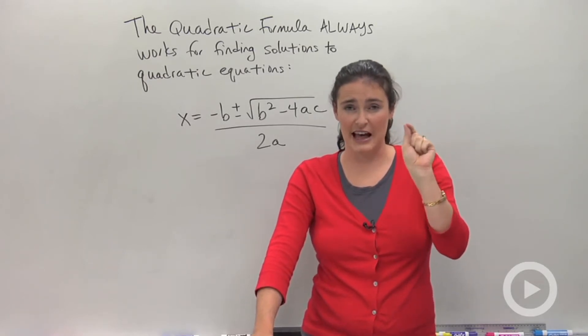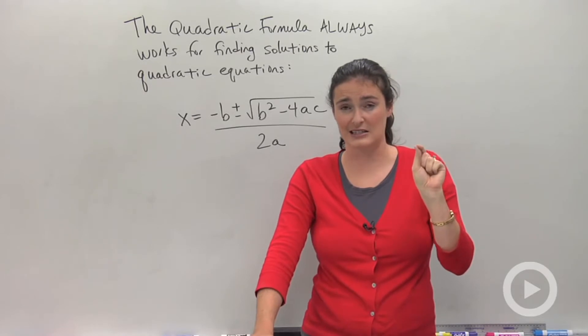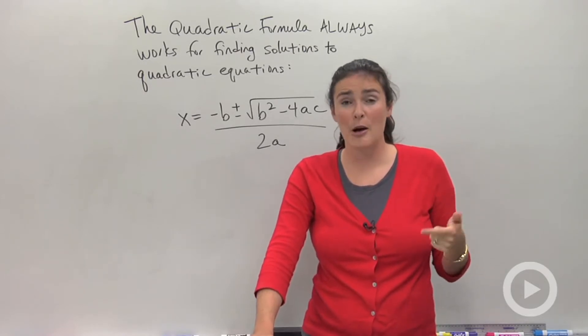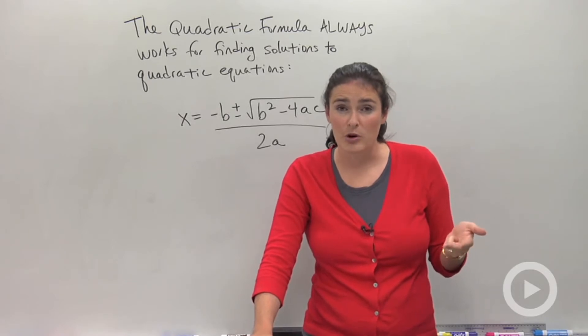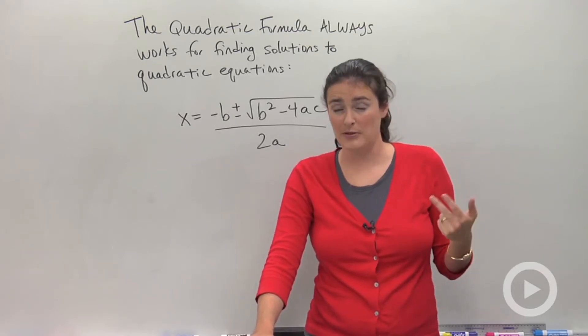Sometimes on the graph it's hard to tell exactly where your line crosses the axis. You could try factoring, but factoring doesn't always work. You could try square rooting both sides if there's no b term, but that's not always the case.